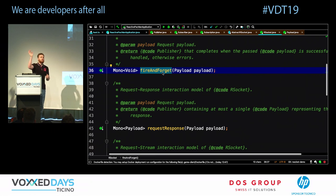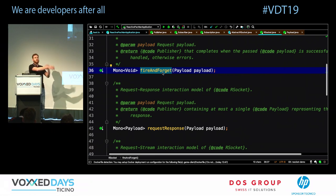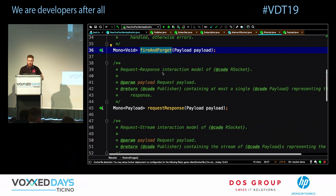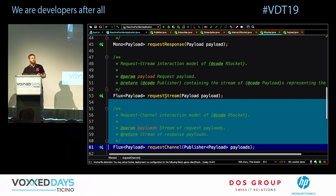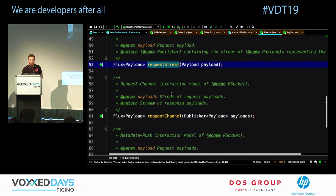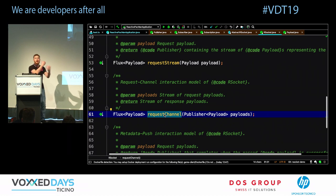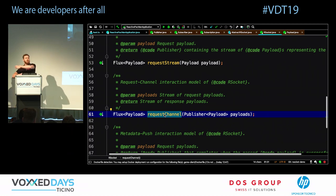There's request-stream — you request a stream of messages from the server. And there's bi-directional streaming — you send a stream of messages one way and receive a stream back. These are the notable communication patterns RSocket supports.